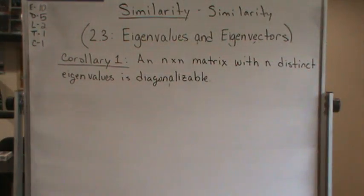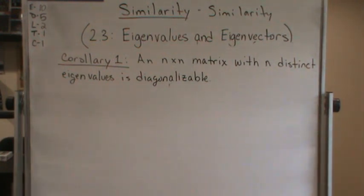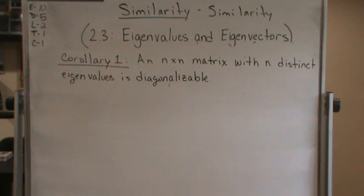Here's Corollary 1. An n by n matrix with n distinct eigenvalues is diagonalizable.